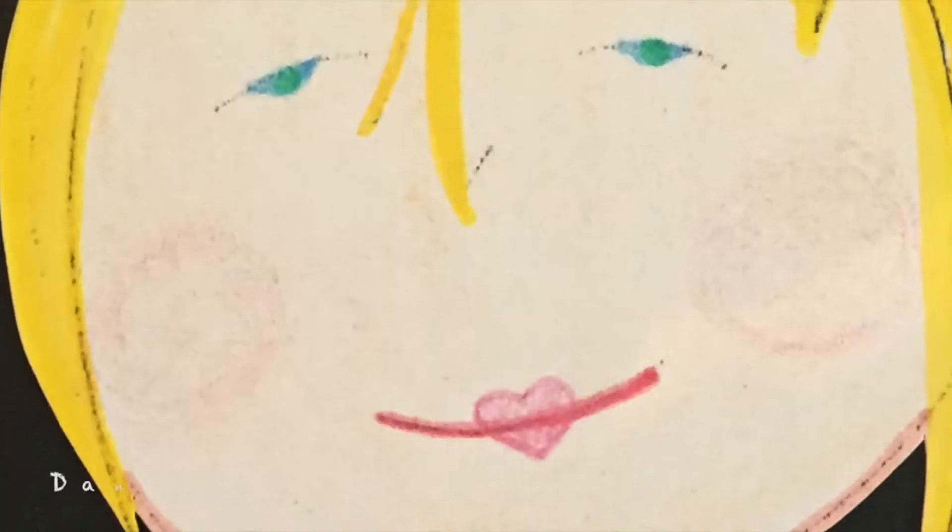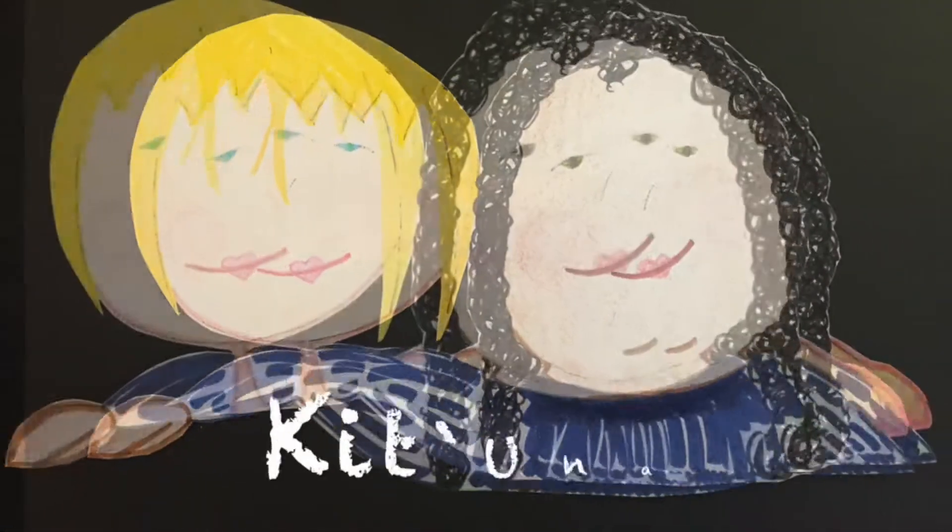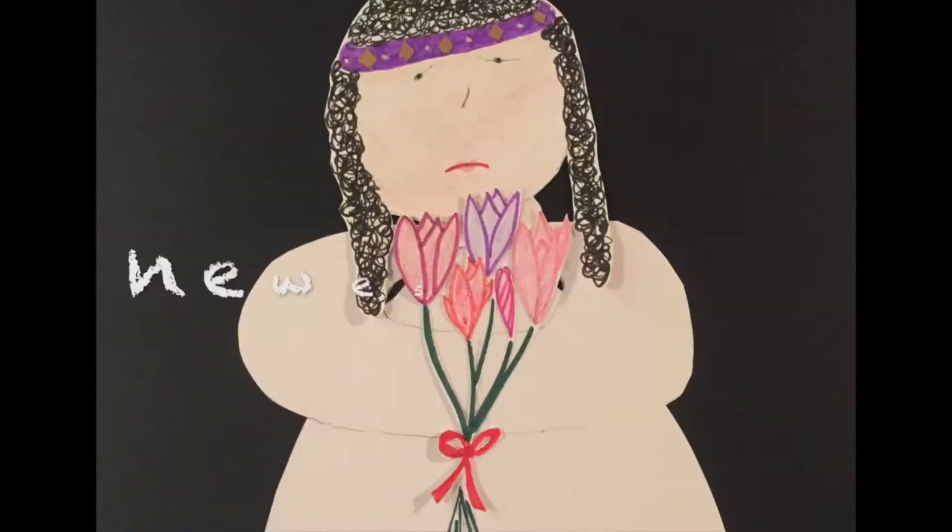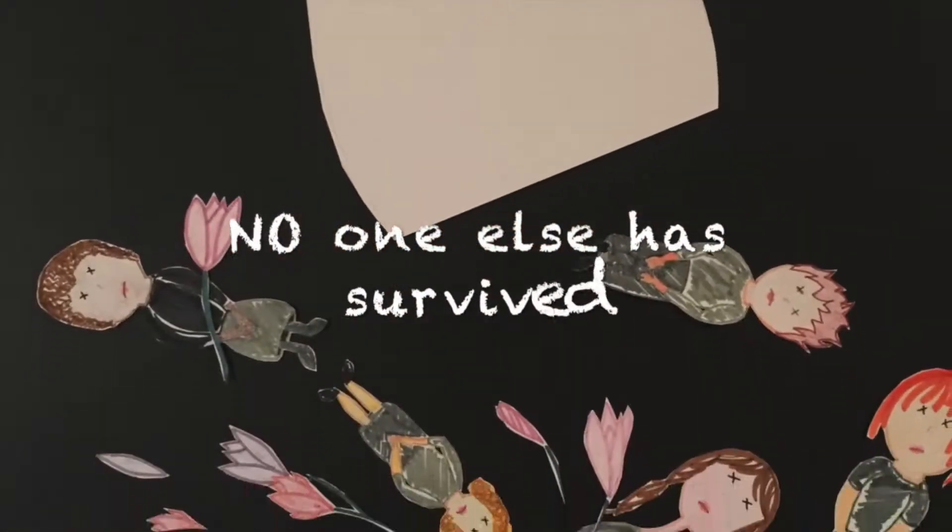Thankfully, Danae has her best friend, Katana. That is, until Katana gets taken away to become the Emperor's newest bride, a title no one has survived.